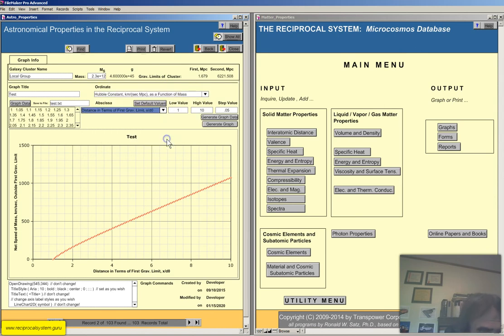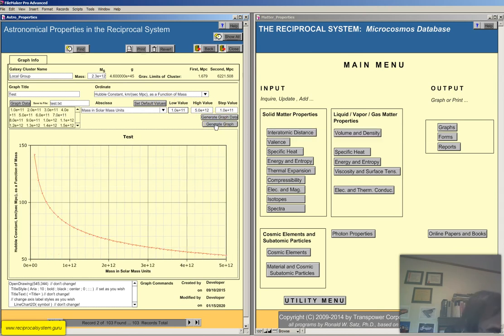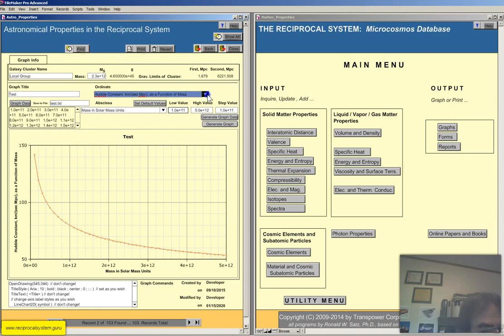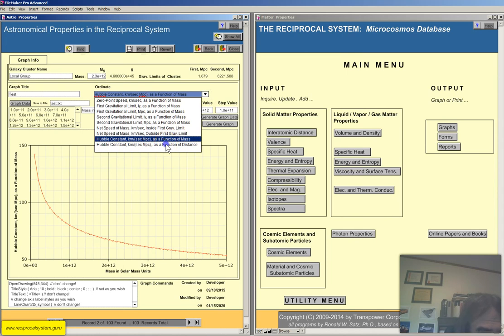Hubble constant is a function of mass. So we have to go back to mass solar mass units here. Click on default values, generate the graph data, generate the graphs. Hubble constant. And you can see it goes down with the size of the galaxy group. Very interesting. You won't find this in any other theory, that's for sure.